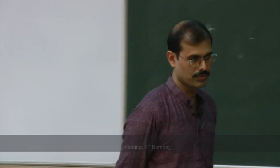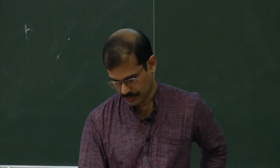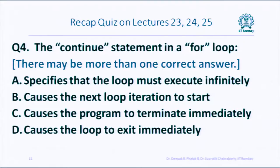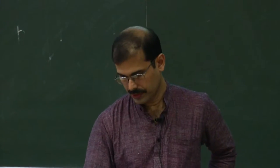If you have just seen the video lectures carefully, you should be able to answer them. It is just to figure out whether you are actually watching the videos. The next question is about the continue statement in a for loop. What does it do? Options: it specifies that the loop must execute infinitely; causes the next loop iteration to start; causes the program to terminate immediately; causes the loop to exit immediately.